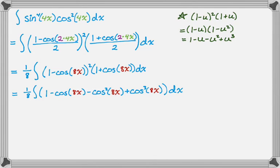Now I see three things I need to do. The first integral, (1/8)∫1 dx, I can just do by looking. The second integral has cos²(8x), so I'll use the cosine-of-2a formula again. The third integral has an odd power of cosine — cos³(8x) — so I'll save one cosine and replace cos²(8x) with 1 − sin²(8x).